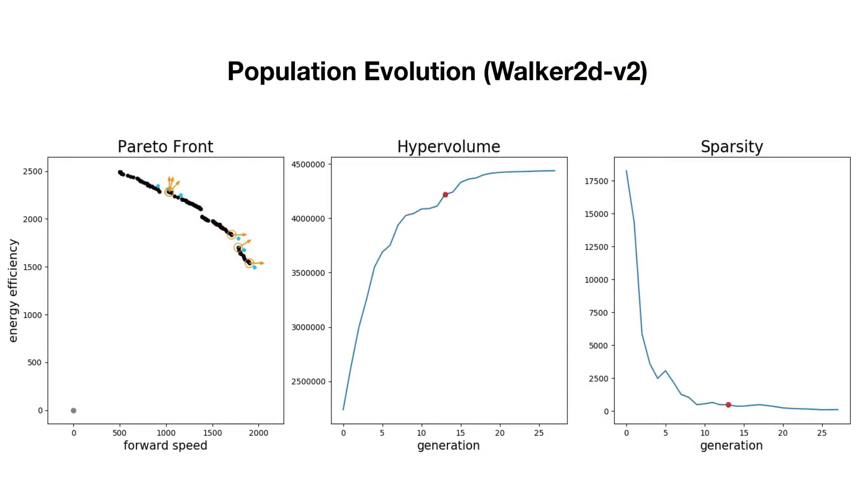Here is the training process for the Hopper 2D problem. The plot on the left shows the evolution of the population over time. The orange circles and arrows are the selected policies and optimization directions in each generation, and the blue points are the predicted offspring. The plots in the middle and right show the hypervolume and sparsity metrics of the population over time.